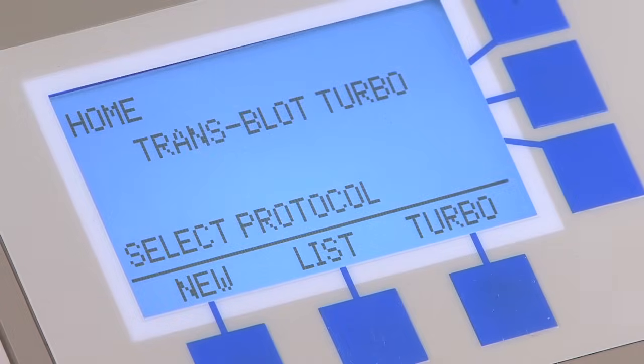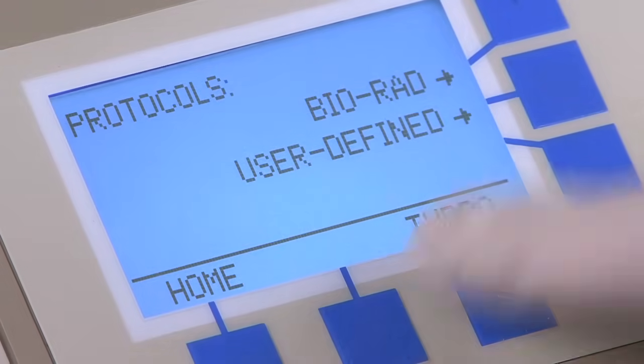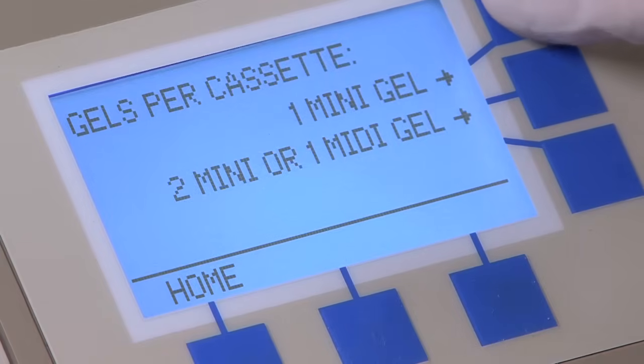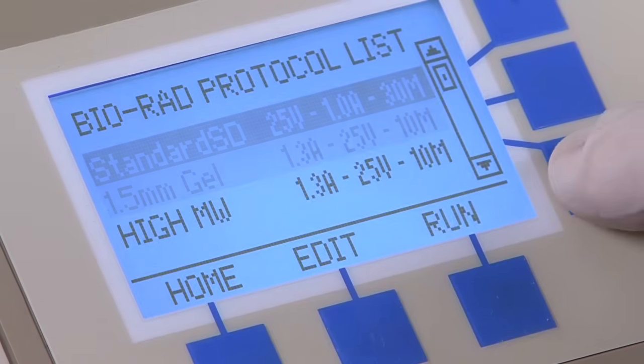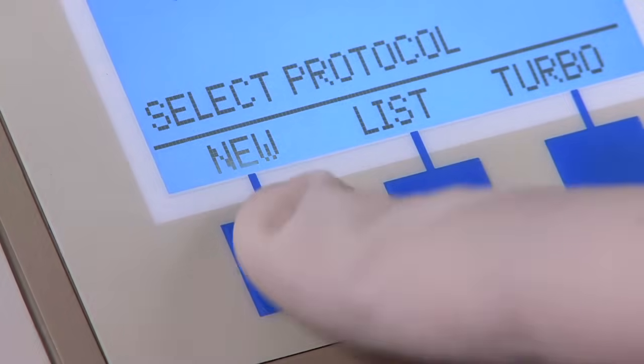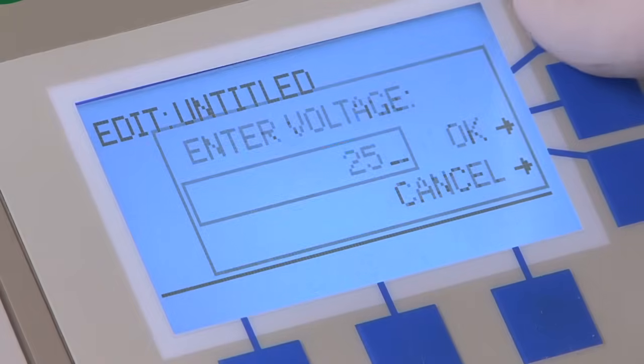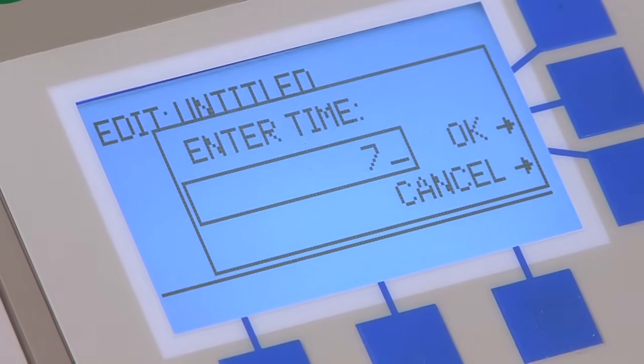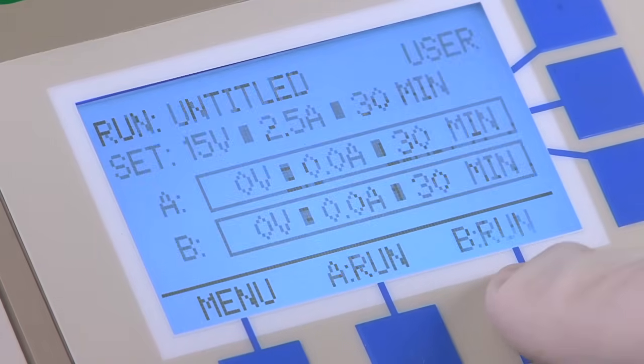The trans-blot turbo system comes preloaded with several protocols for transferring a wide range of proteins from any gel type. In addition to the preinstalled protocols, you can also program and save your own transfer conditions. By varying the voltage, current, and time, you can customize the trans-blot turbo for your own specific needs.